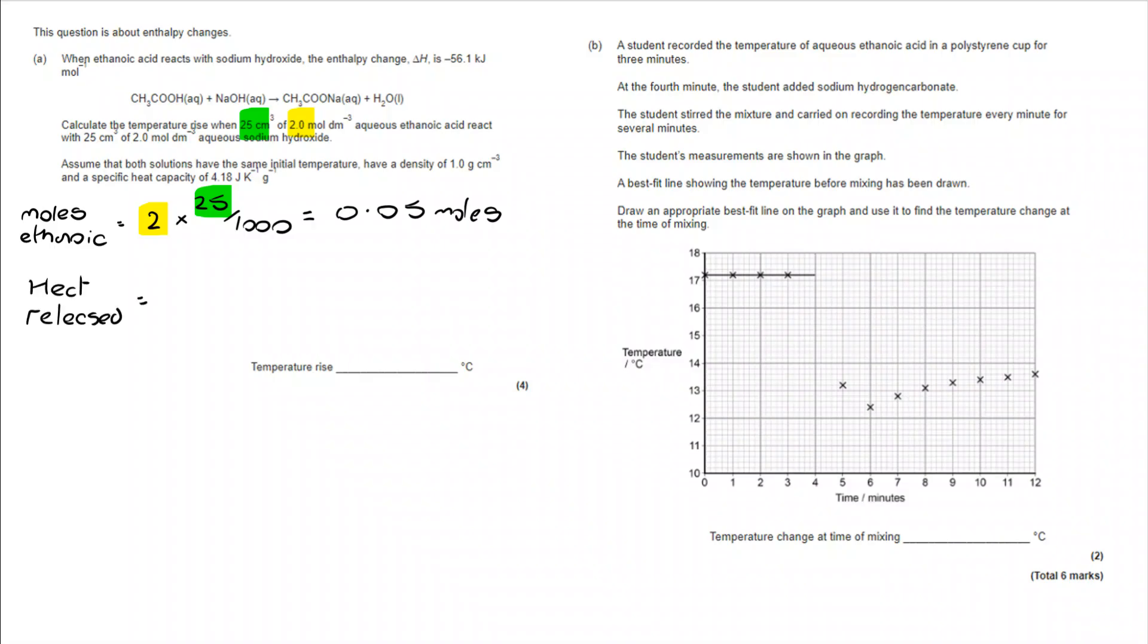From there, I'm going to move on and calculate the heat energy that has been released. I know that I would get 56.1 kilojoules per mole released. But I didn't have one mole. I've only got 0.05 moles. So, I'm going to multiply the 56.1 by 1000 to convert it to joules. And then I'm going to multiply it by 0.05 so I know how many joules of energy were released by the sample that we had. That takes us to a value of 2805 joules.